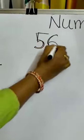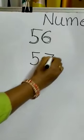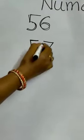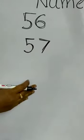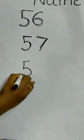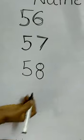5, 6, 56. 5, 7, 57. Children, 57 after? Yes. 5, 8, 58.